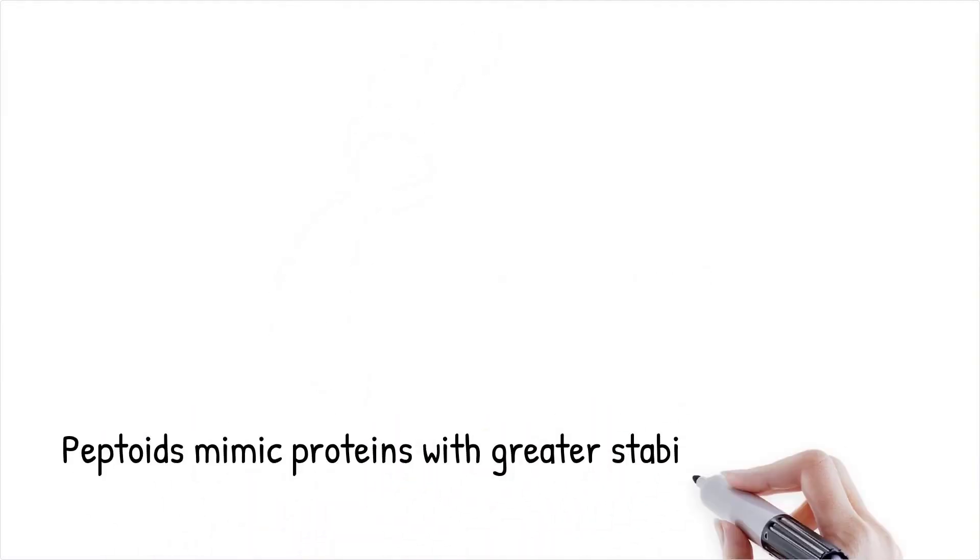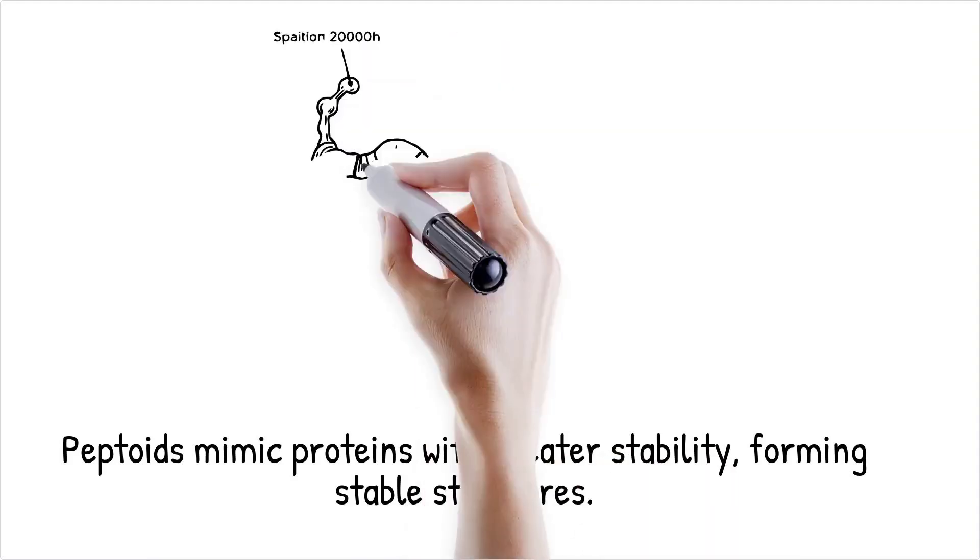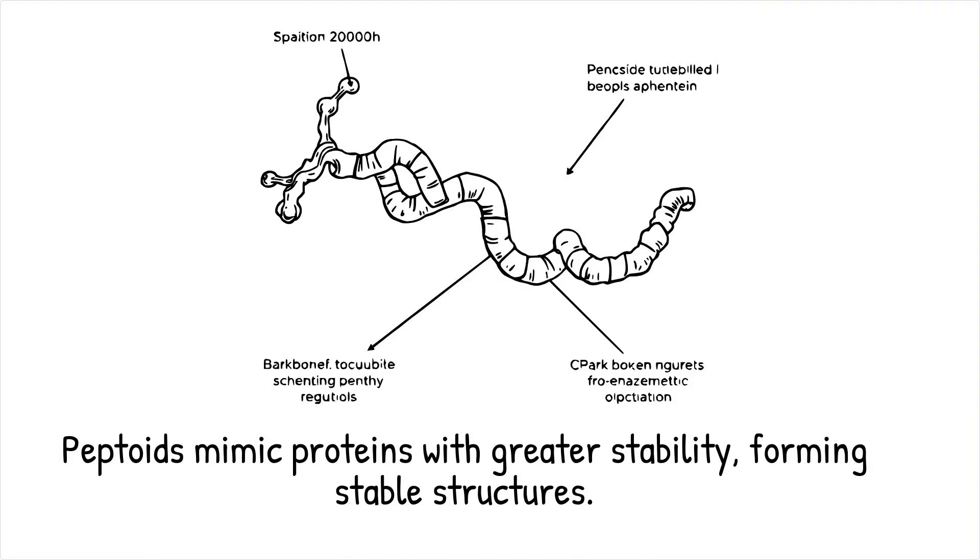Peptides and their synthetic counterparts, peptoids, are smaller molecules that mimic proteins but with enhanced stability against degradation. Peptoids are designed to fold into stable secondary structures such as helices using backbone modifications that prevent enzymatic cleavage.